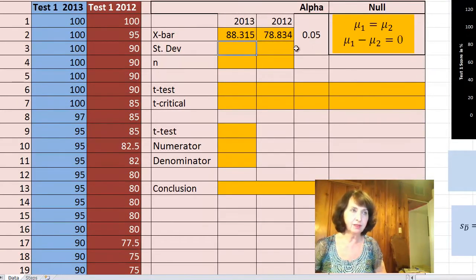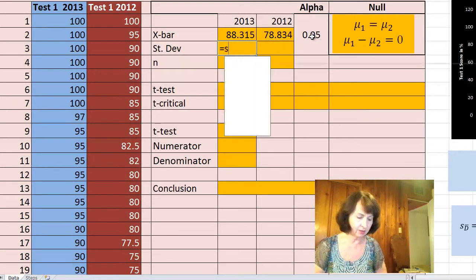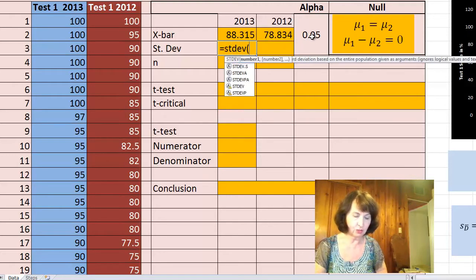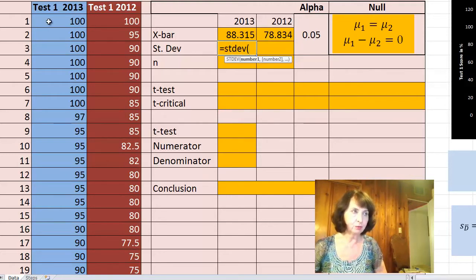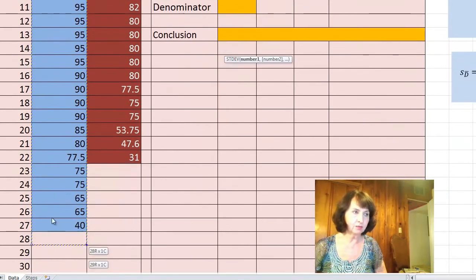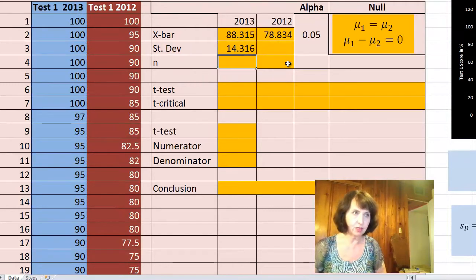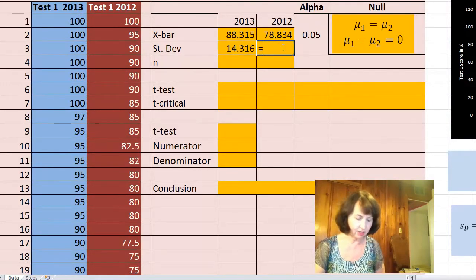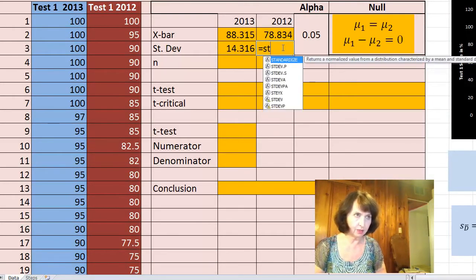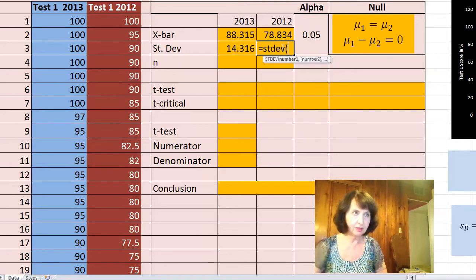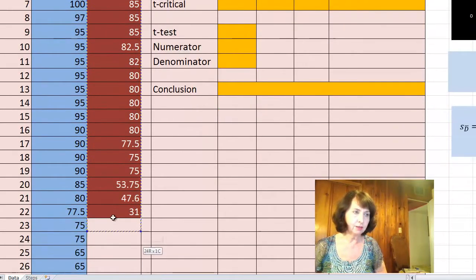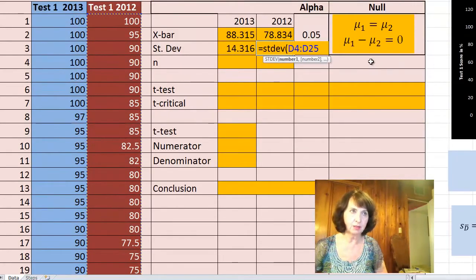I also need the standard deviation of these two tests. I have to put all the cells. So my range for the first sample is from C4 to C30, and my range for the second sample standard deviation is in D4 to D25, a little smaller sample.